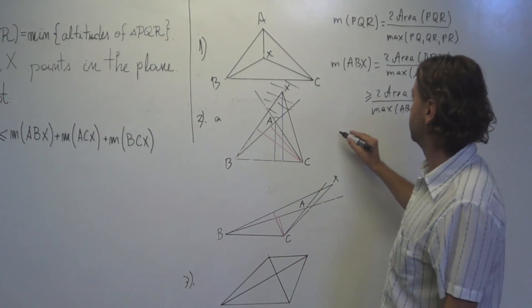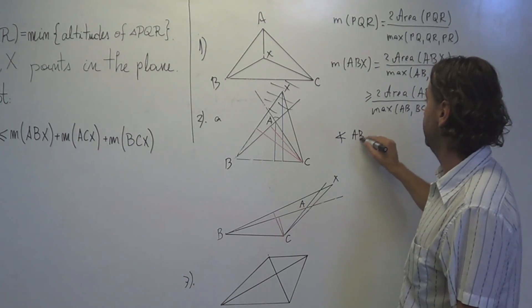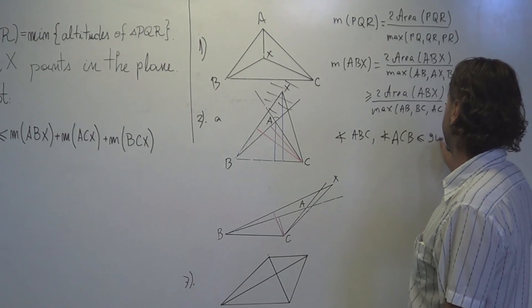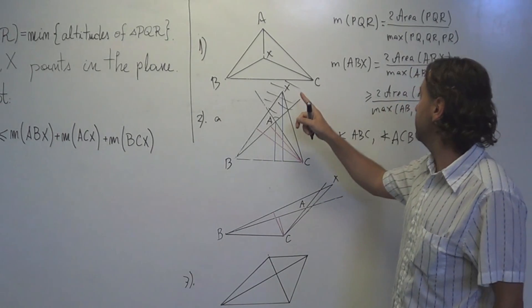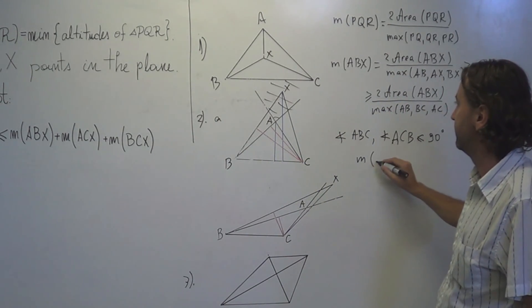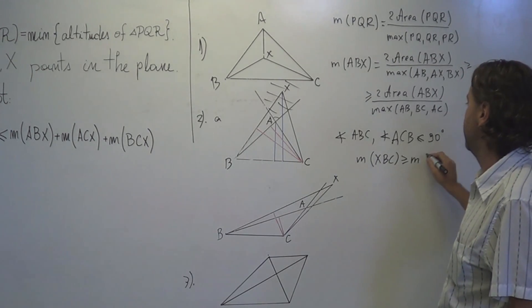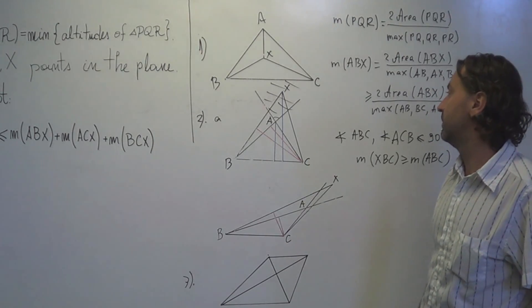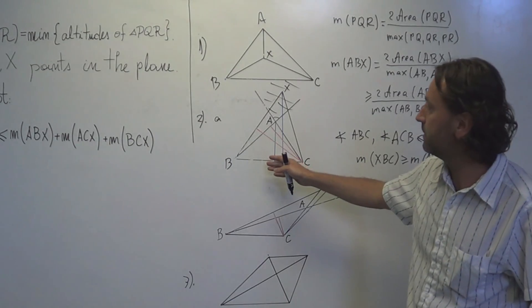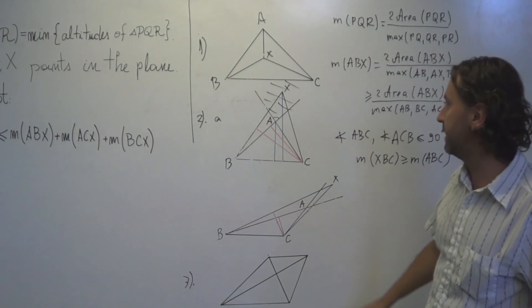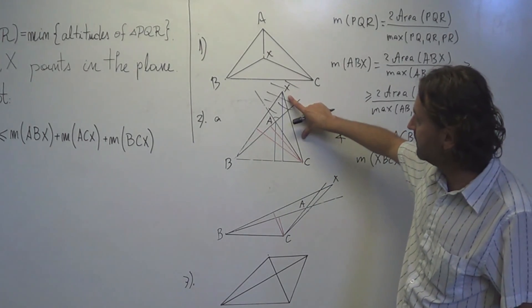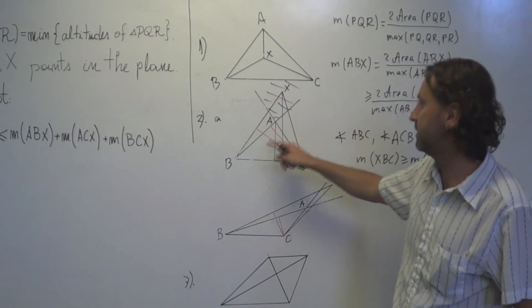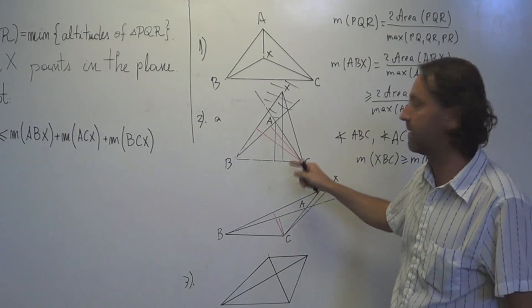But first let's do this one. Okay, in the first case, this is the case when the angle ABC and the angle ACB are smaller or equal than 90 degrees, pi over 2. Okay. Now in this case I claim that M of XBC is greater or equal than M of ABC. And how to prove this? Well, we can just look directly on the altitudes of the two triangles ABC and XBC.